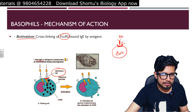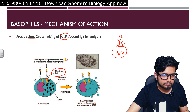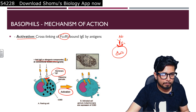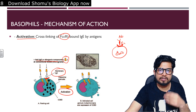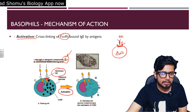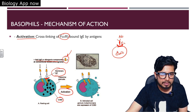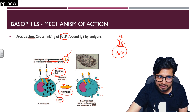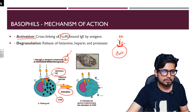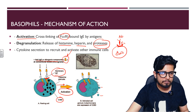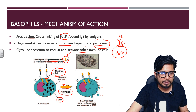Once the allergen binds to the IgE on the basophil surface, CD63-mediated release of granules occurs. The granules release chemical factors — histamines, leukotrienes, and prostaglandins — causing allergic or anaphylactic reactions. Degranulation releases histamines, heparins, and proteases, which destroy nearby tissue proteins, and cytokines are secreted to recruit and activate other immune cells.